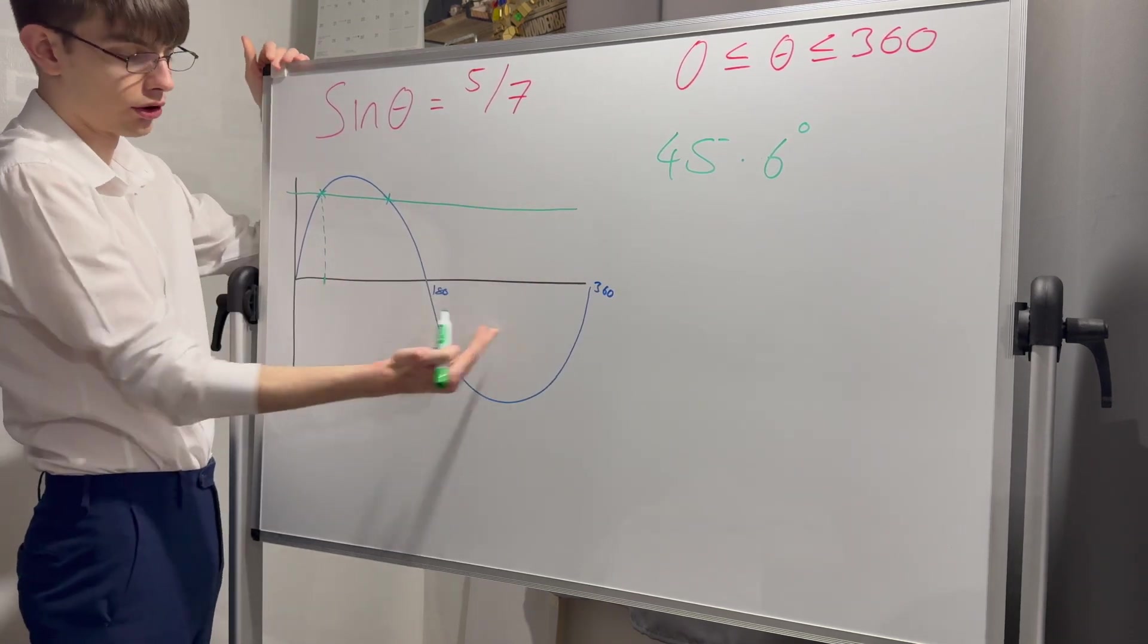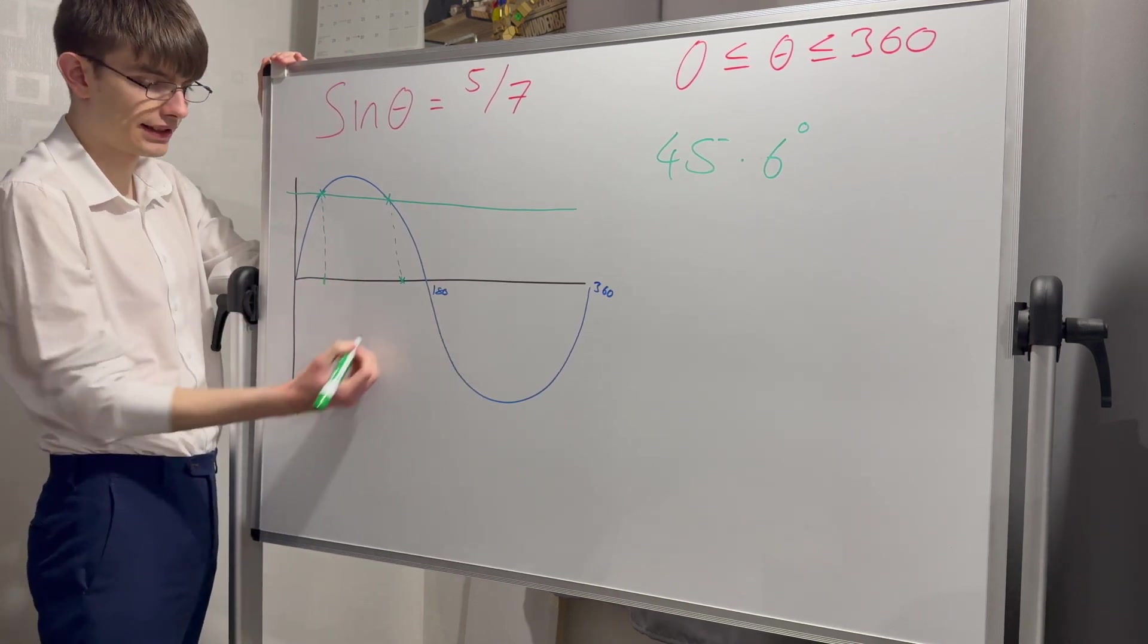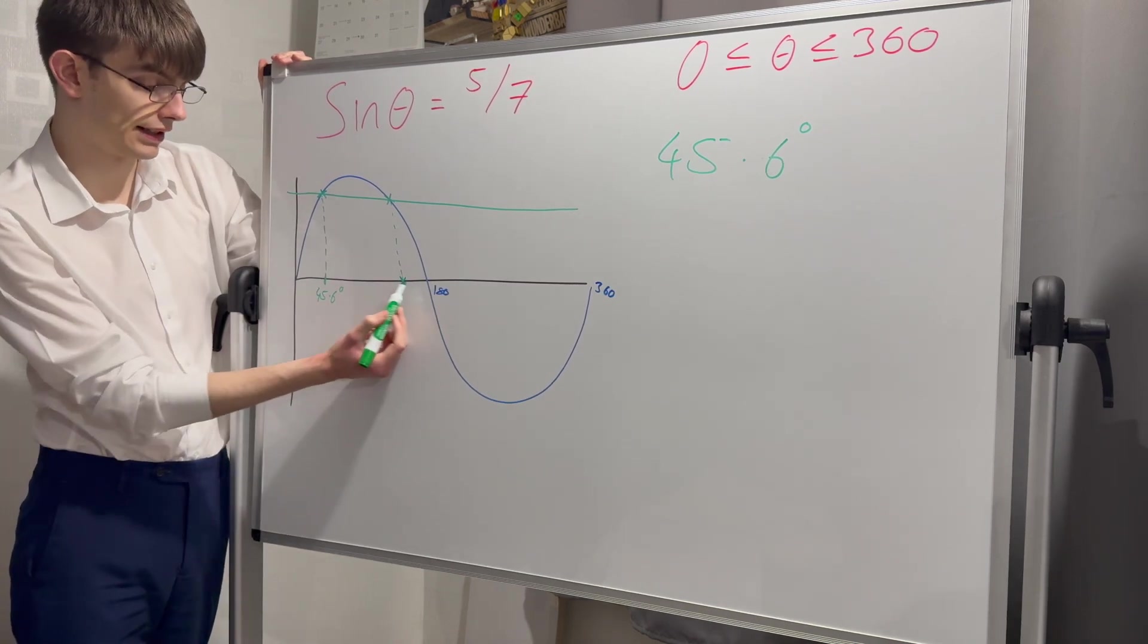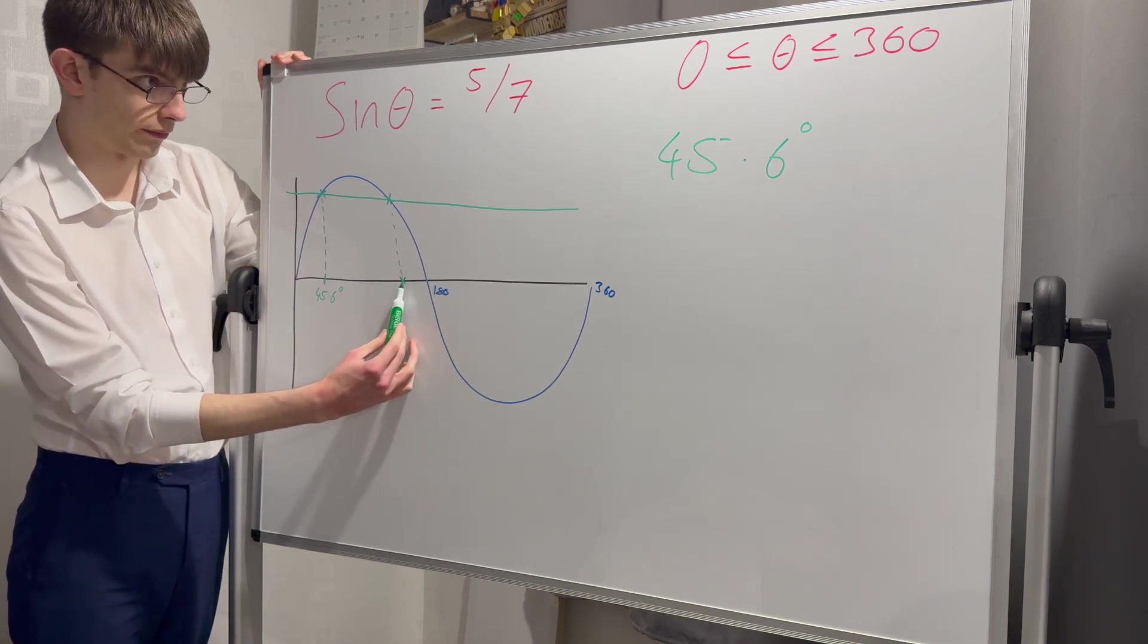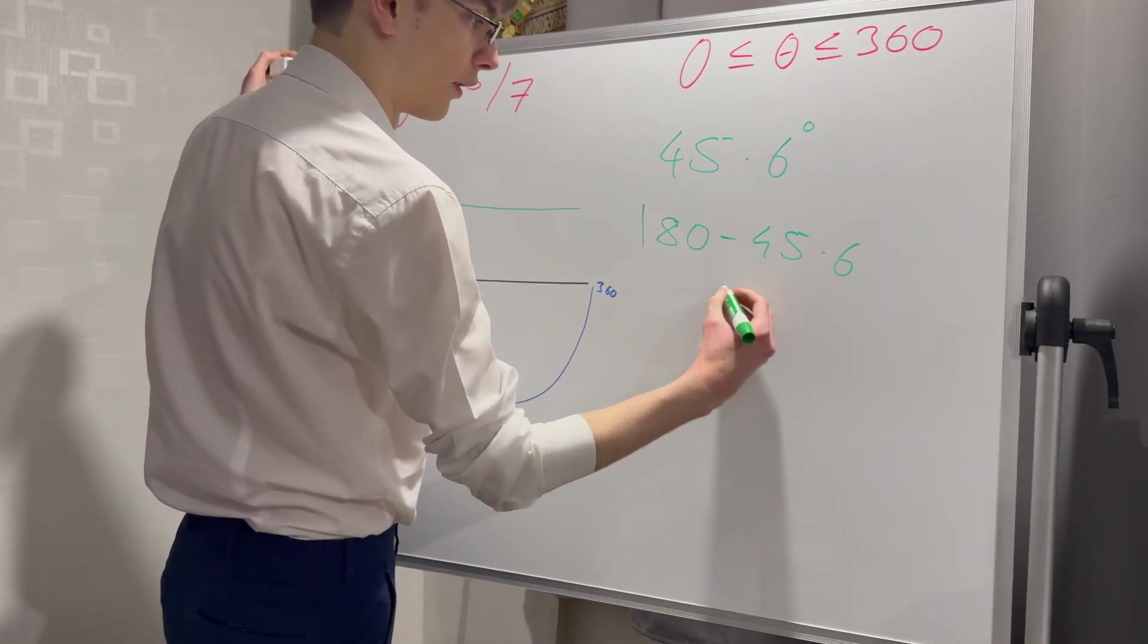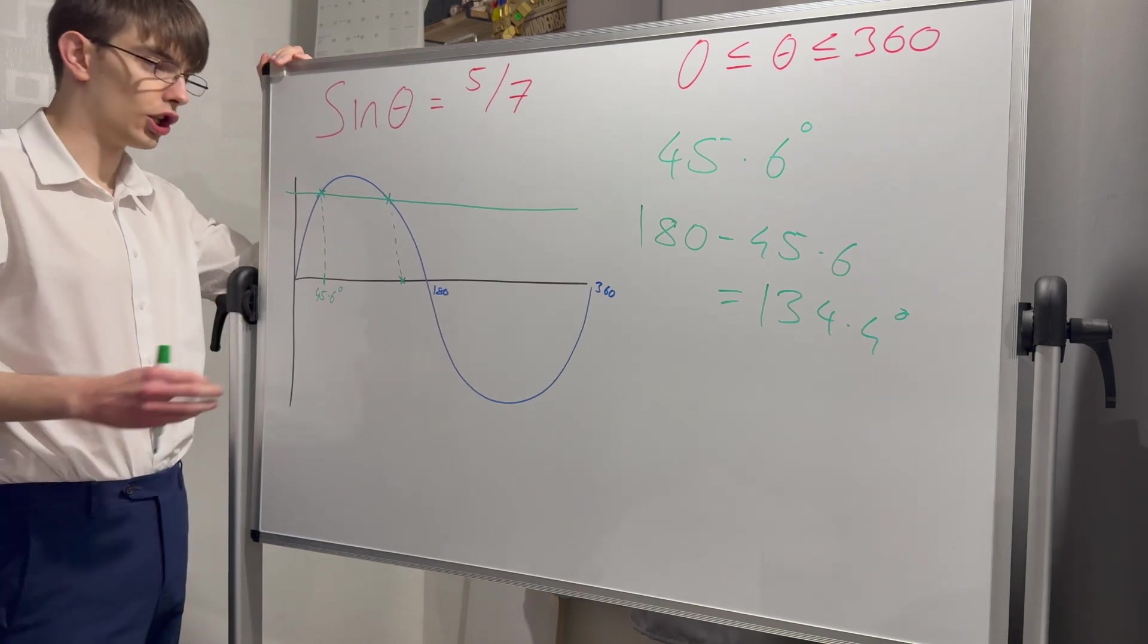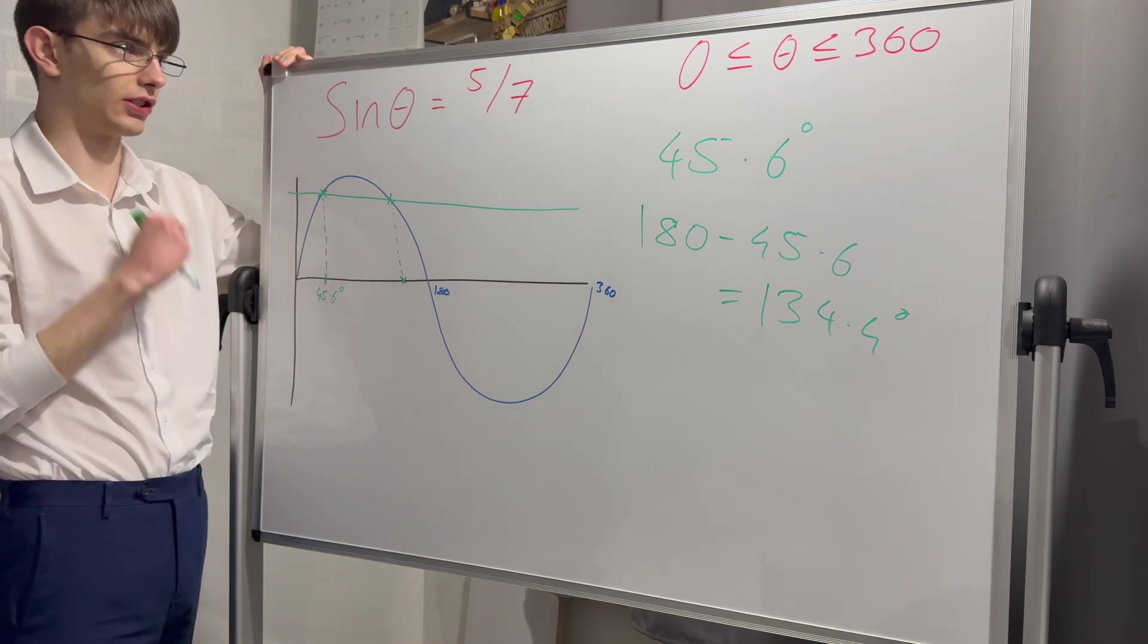I'm going to draw another line down here and this is the x value I'm looking for. I know that this is 45.6 and this here is perfectly symmetric. This distance is 45.6, this distance is 45.6. So my other option is 180 minus 45.6, which is 134.4. The graph is brilliant because we can immediately see there's only two solutions.